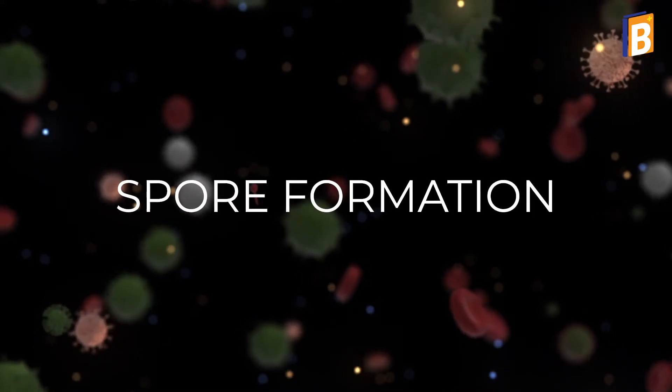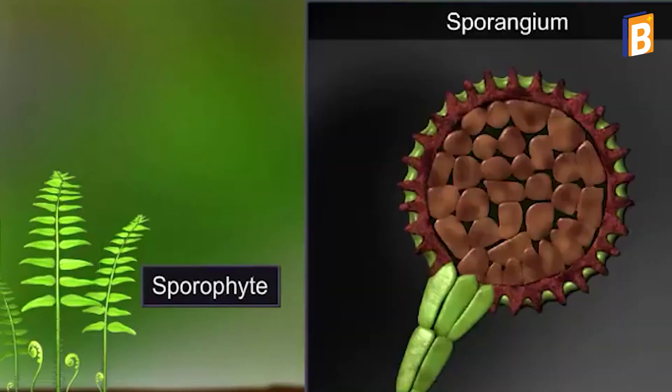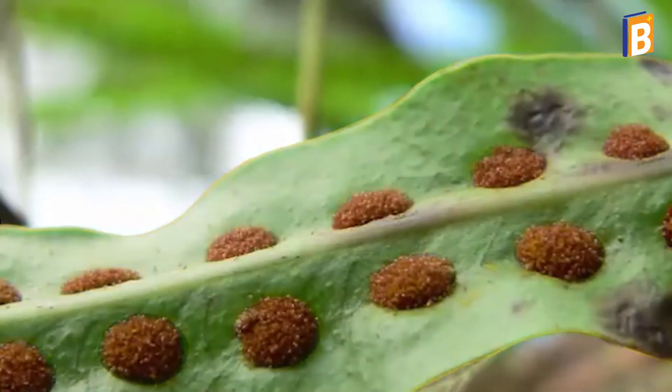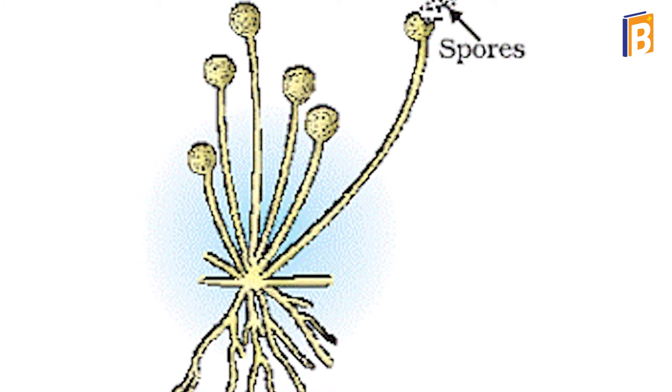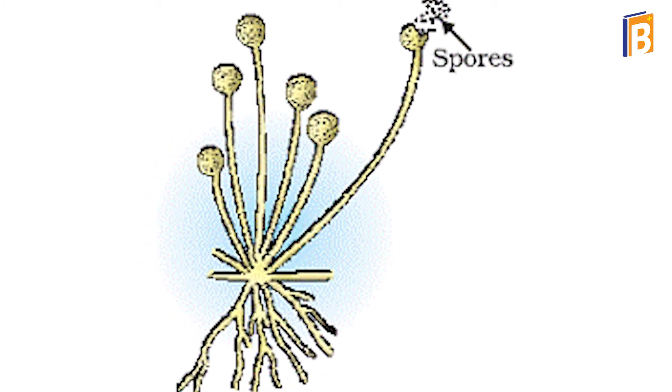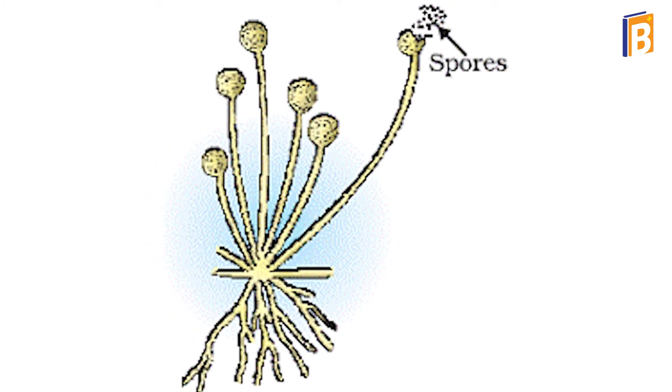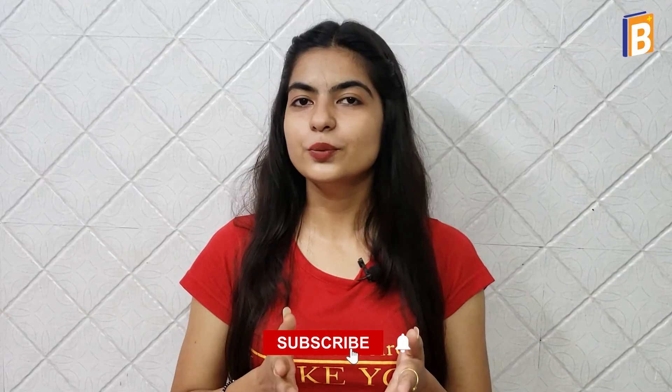The last method is spore formation. These organisms belong to the fungi group and produce spores in a structure called a sporangia. The spores spread into the ground and air and produce new organisms. For example, Rhizopus.